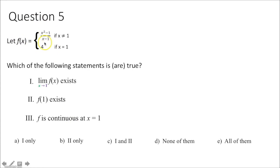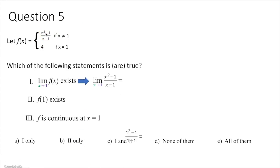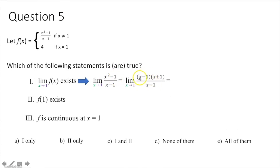Question 5: let f of x equal a piecewise function. Statement 1: does the limit as x approaches 1 of f of x exist? Plugging in 1 gives 0 over 0 — an indeterminate form, not a nonexistent limit. Factoring x squared minus 1 as a difference of squares, the x minus 1 cancels, and plugging in 1 gives a limit of 2. So the limit exists.